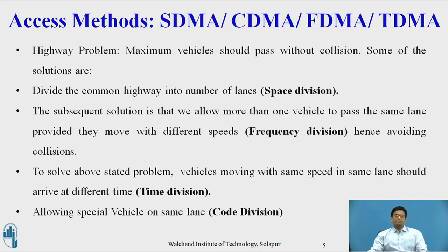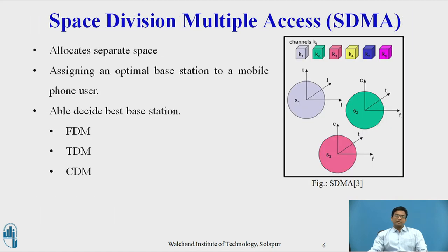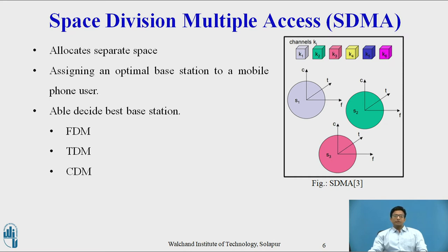Applying this analogy to the schemes: in space division multiplexing access, the figure shows channels K1 to K6 introduced with a three-dimensional coordinate system with dimensions code (C), time (T), and frequency (F). For SDM, three spaces S1, S2, and S3 are shown, mapped to channels K1 to K3. To avoid overlapping, guard space is maintained between these spaces. The space between interference range is called guard space, and every multiplexing scheme requires guard space. SDM is used for allocating separate space to users in a wireless network.